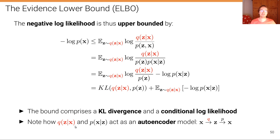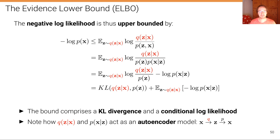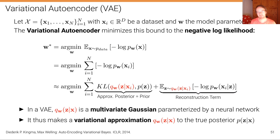Note how q of C given X and P of X given C act as an autoencoder: q is the encoder that maps from X to C, and P is the decoder that maps from C to X. That's why it's called a variational autoencoder. In a VAE we find w-star as the minimizer over all data points of this negative log likelihood bound, which comprises an approximate posterior discrepancy term and a reconstruction term.